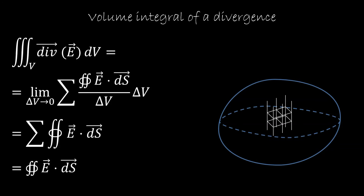The last question we ask is: what is the volume integral of a divergence? We take the volume and chop it up into pieces. The divergence at each point tells us the closed surface integral around that point divided by the volume. But with the volume integral, we're multiplying by the volume, so the volume goes away and we're just summing all the different contributions. Each surface inside the volume will have a contribution plus an opposite contribution that cancels out, so what we get is just the contribution on the boundary. So the volume integral of a divergence is the surface integral on the boundary of the field.